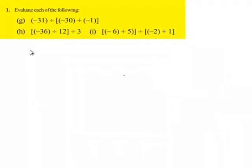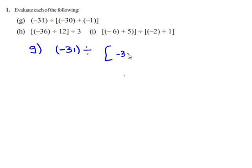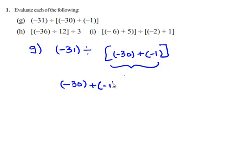We will see the next problem. We will write the question. That is negative 31 divided by negative 30 plus negative 1 within the brackets. First we will solve the values within the brackets. That is negative 30 plus negative 1, which gives negative 31. This becomes negative 31 divided by negative 31.